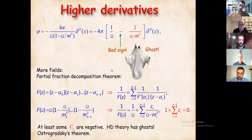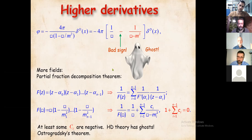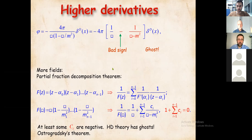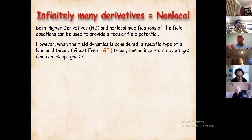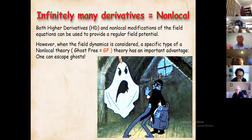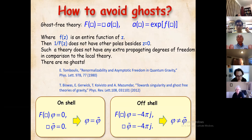An infinite number of derivatives can help solve the problem and avoid ghosts. Non-locality with an infinite number of derivatives comes in a variety of kinds, but we focus on ghost-free non-localities — those that will not produce any extra degrees of freedom compared to the local theory. The class we consider here uses a non-local form factor F which is the d'Alembertian times an exponential of an entire function.